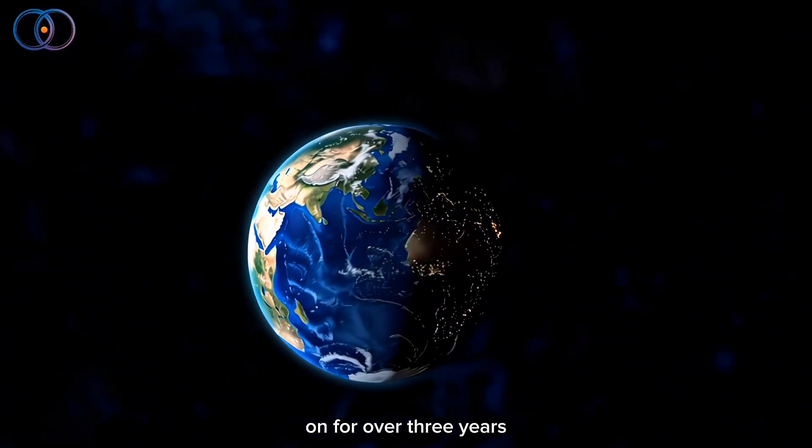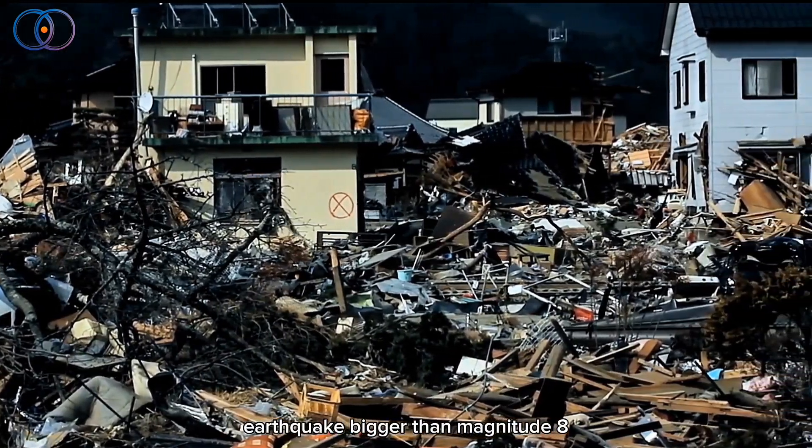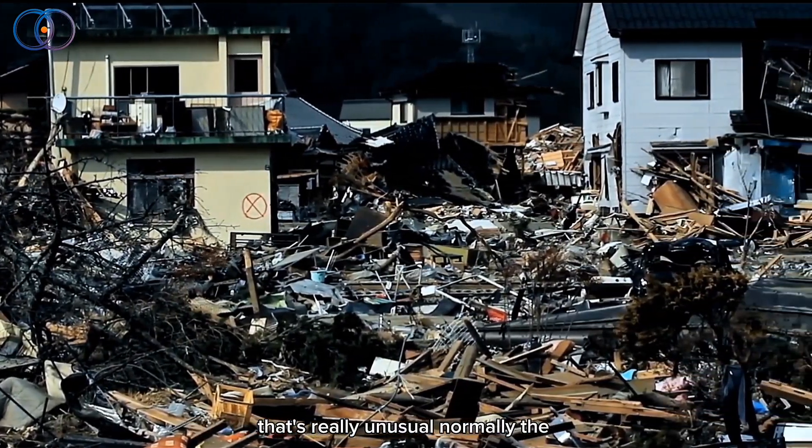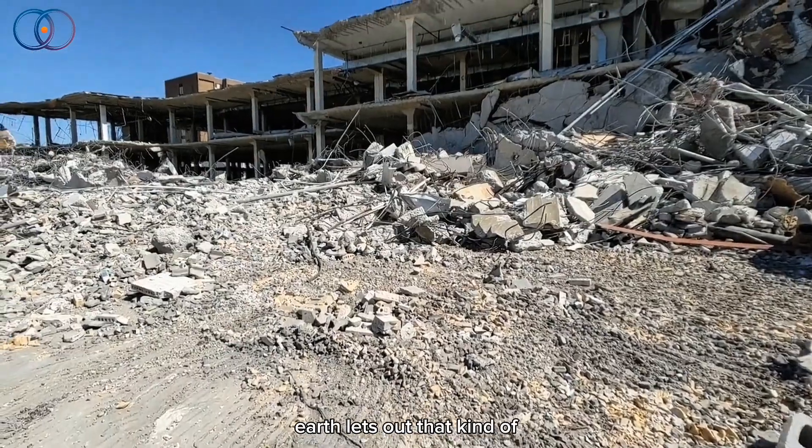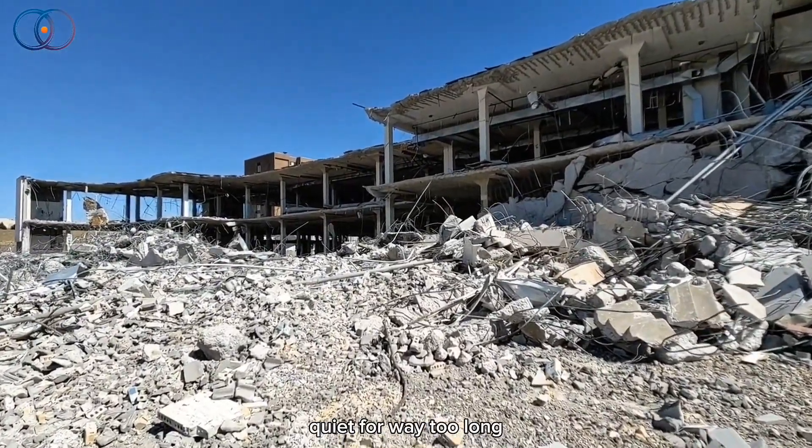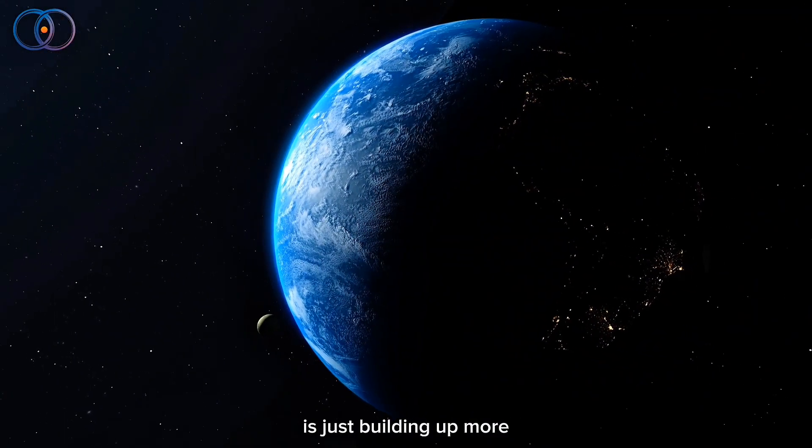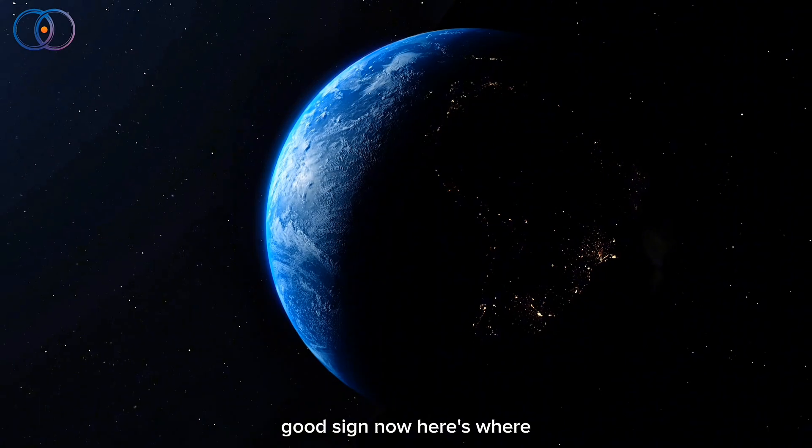So here's what's going on. For over three years, we haven't seen a major earthquake bigger than magnitude 8. That's really unusual. Normally the Earth lets out that kind of pressure once every year or so, but now it's been quiet for way too long. Scientists are worried that the pressure inside the Earth is just building up more and more. That's never a good sign.